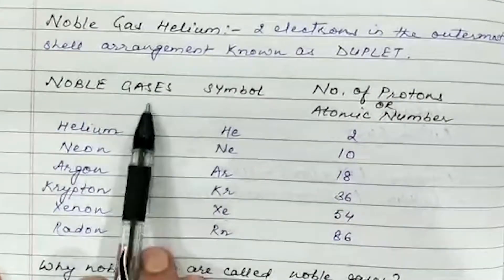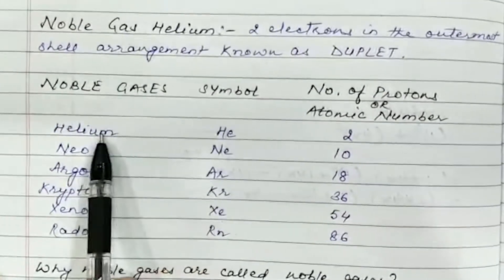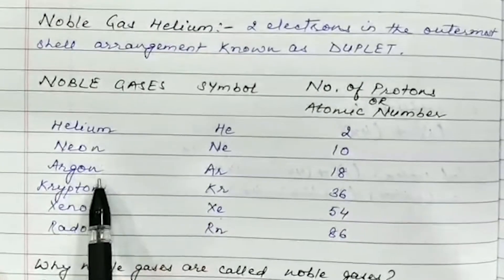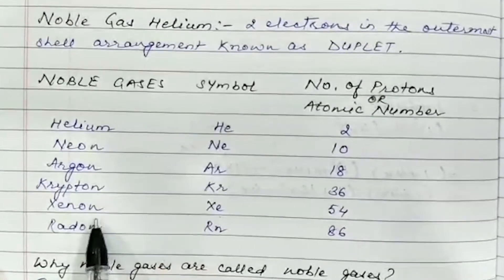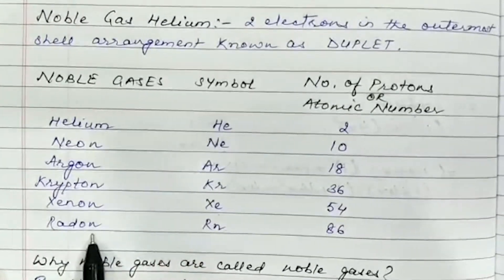The Noble Gases are: Helium, Neon, Argon, Krypton, Xenon, and Radon.